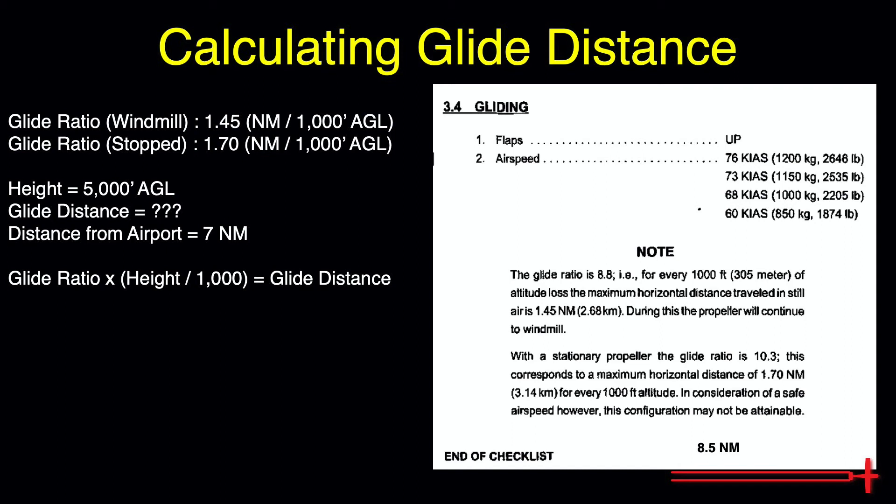Going back to our engine failure scenario from earlier, with the prop windmilling and 5,000 feet altitude, we can expect a glide distance of roughly 7.2 nautical miles. With the airport exactly 7 nautical miles away, that 0.2 nautical mile buffer doesn't leave us much room for error. Remember, this 7.2 nautical miles is best case scenario.